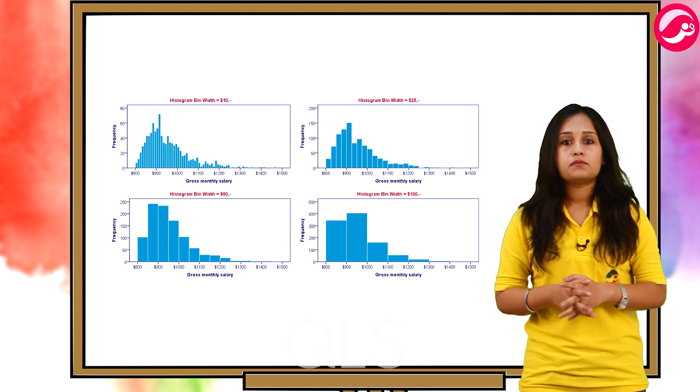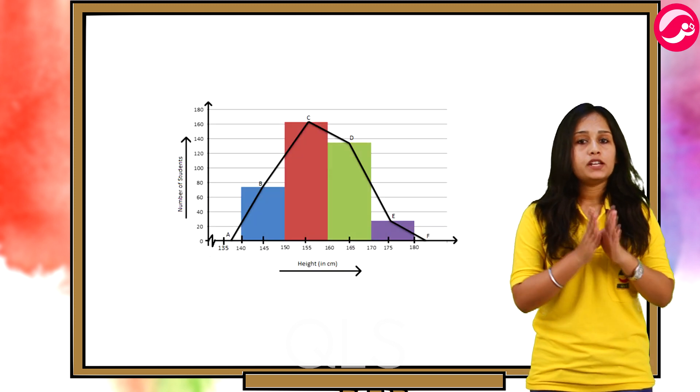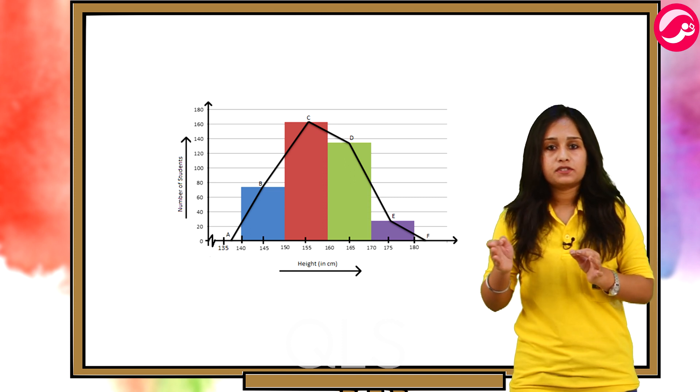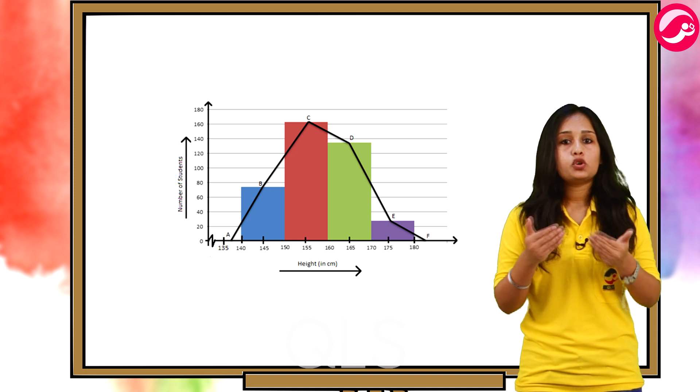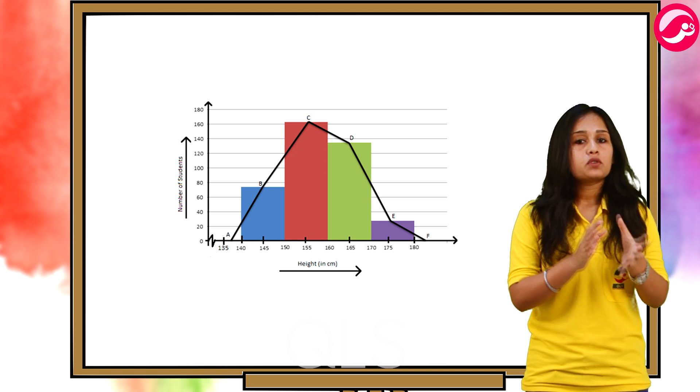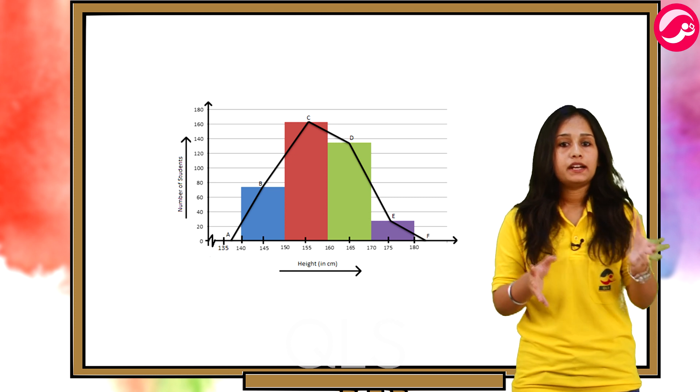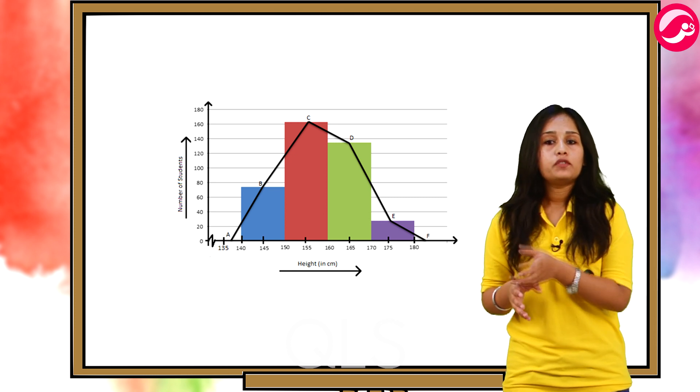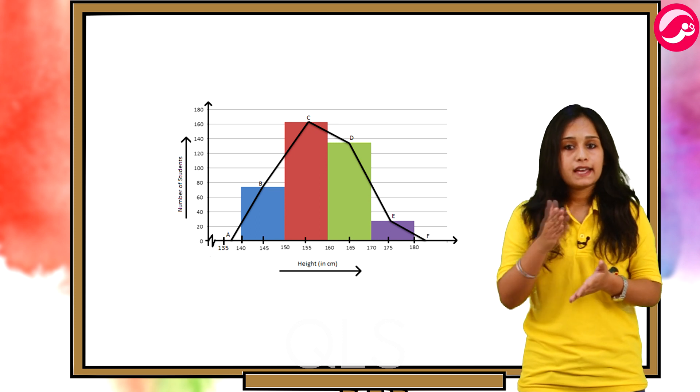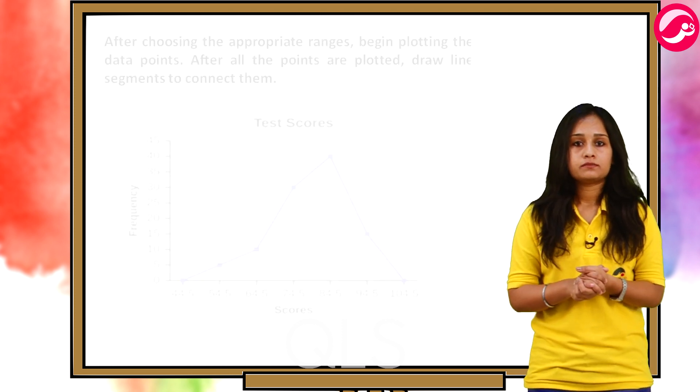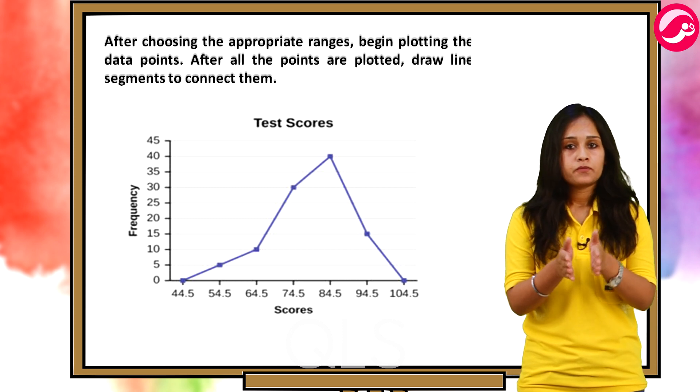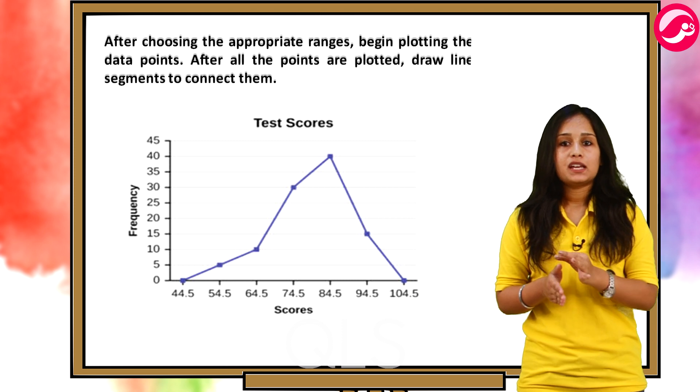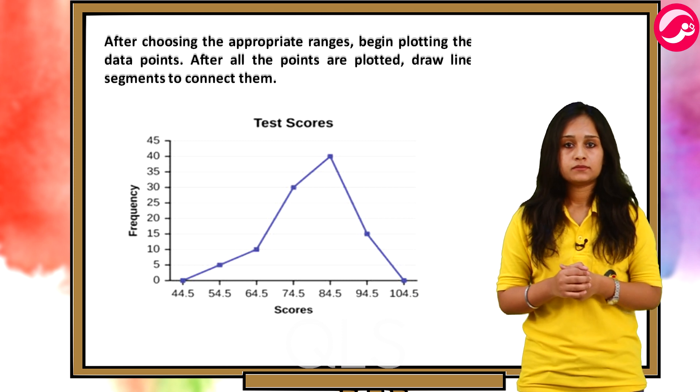Now, let us talk about various graphs such as bar graphs, histograms and frequency polygons. Frequency polygons are analogous to line graphs and just as line graphs make continuous data visually easy to interpret, so do frequency polygons. To construct a frequency polygon, first examine the data and decide on the number of intervals or class intervals to use on the x-axis and y-axis. After choosing the appropriate ranges, begin plotting the data points. After all the points are plotted, draw line segments to connect them.